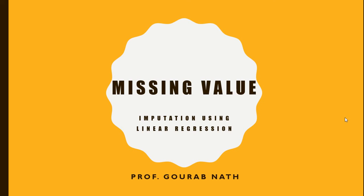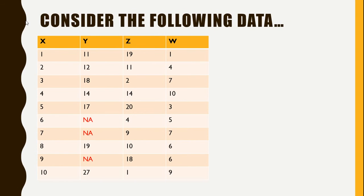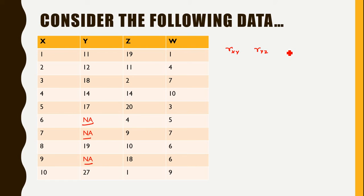Welcome everyone. In this video, we are going to study the imputation of missing values using simple linear regression. Suppose the variable that contains the missing value is a numeric variable. In this dataset, the variable Y is a numeric variable that contains three missing values. All we are going to do is identify the most correlated variable in the dataset, fit a regression model of Y on that variable, and predict the missing values. We find correlations between X and Y, Y and Z, and Z and W, and suppose the correlation between X and Y is the greatest — then we fit a regression model of Y on X.